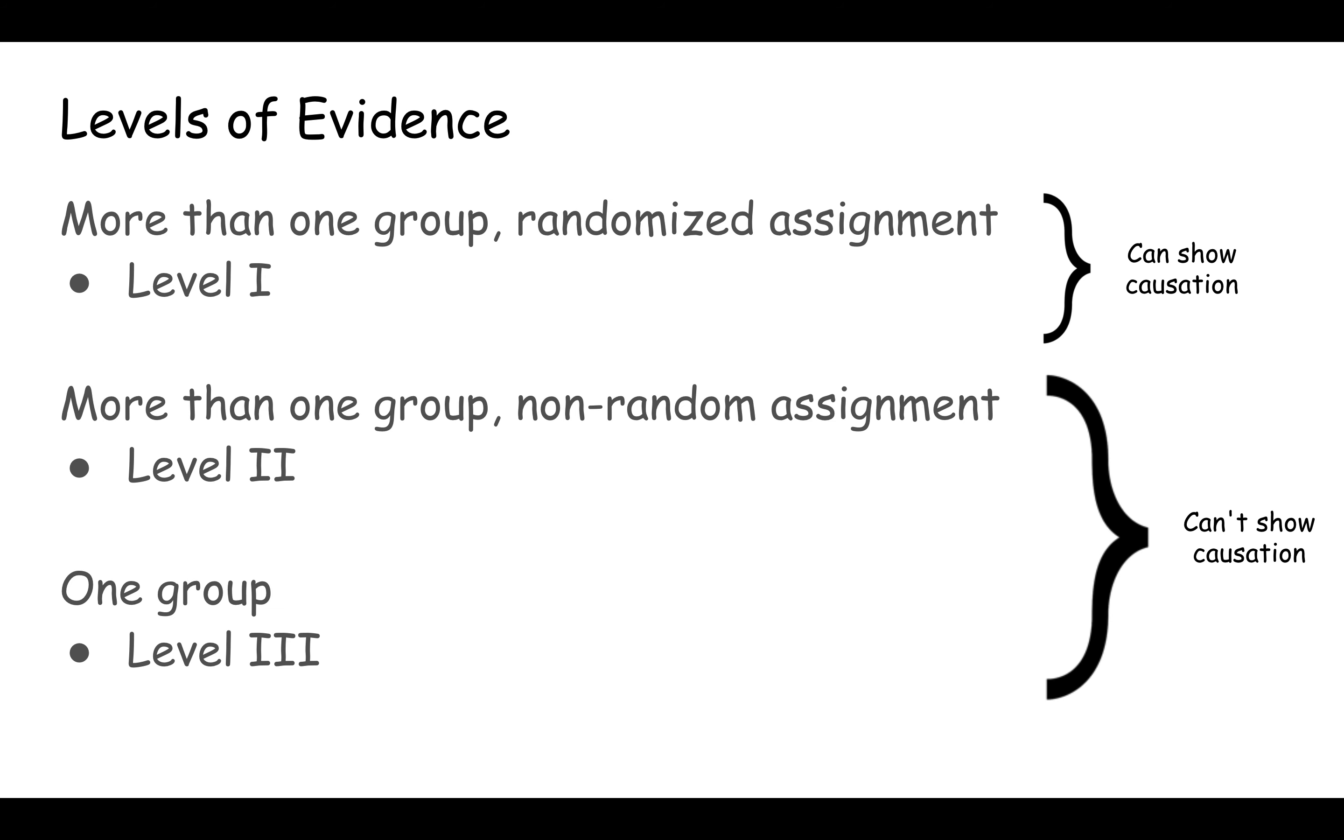For us, the important distinction is level one, where you have more than one group and participants are randomly assigned to groups. That's the type of experiment that can show causation, can show that some intervention led to some outcome. Level two and three can't show causation.